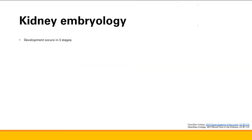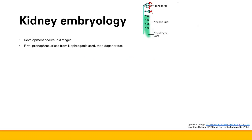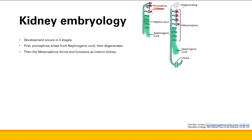Now let's go into kidney embryology. Embryology is going to occur in three different stages. First, you're going to get the pronephros, which develops from the nephrogenic cord. So first stage, pronephros arises, and then soon it degenerates — degeneration of pronephros.